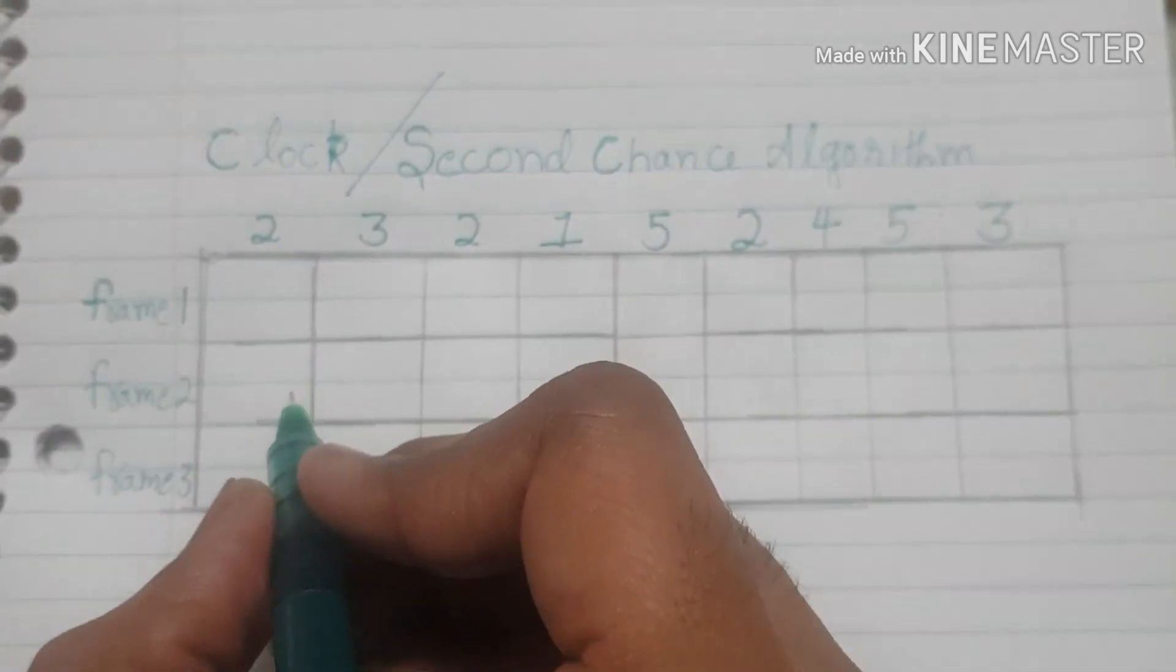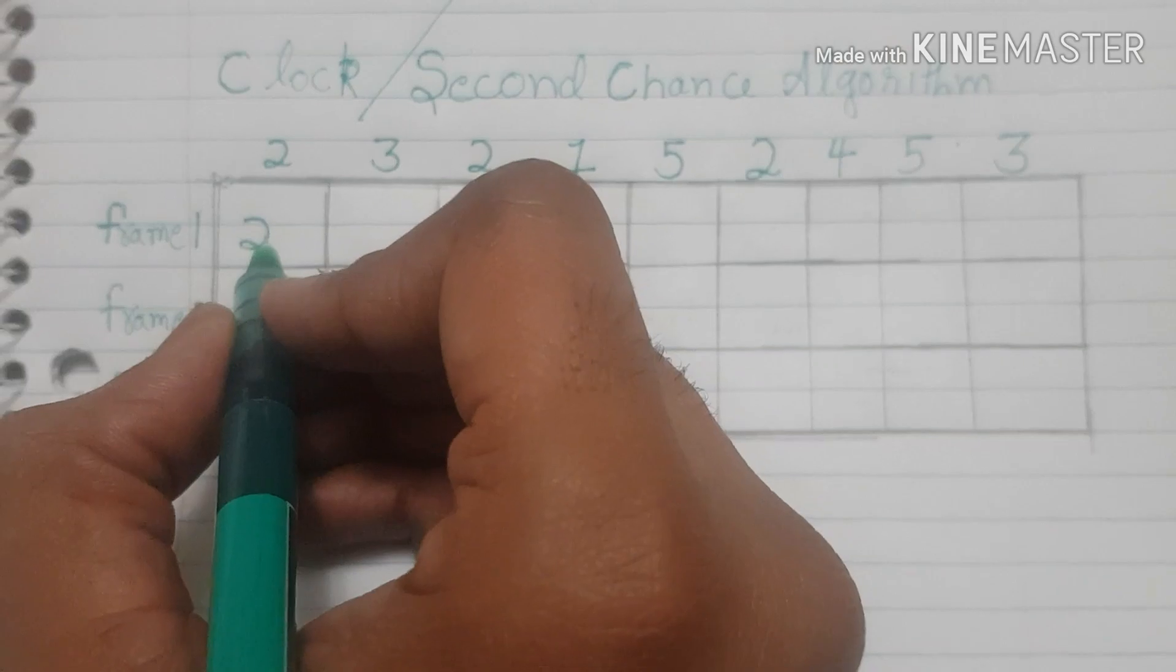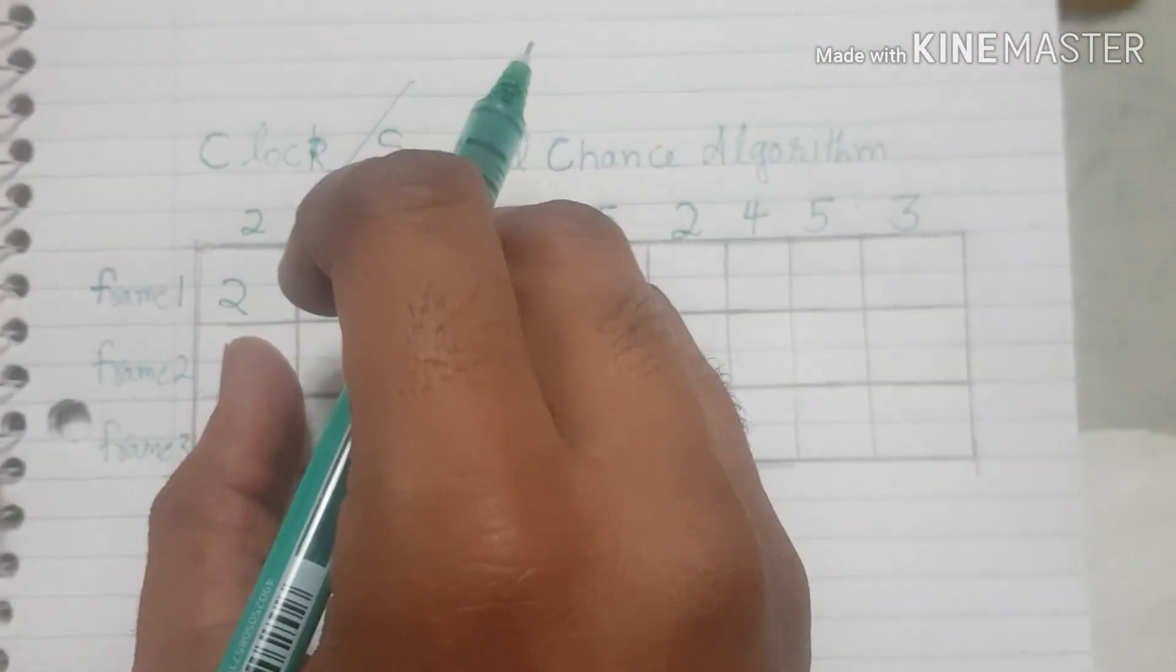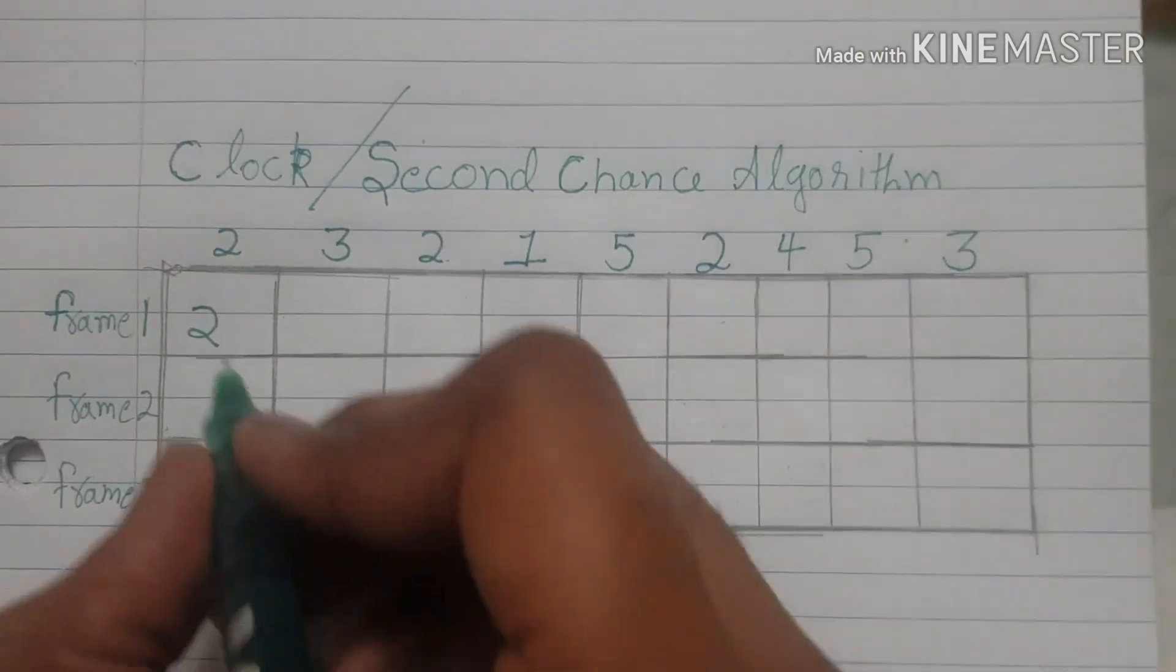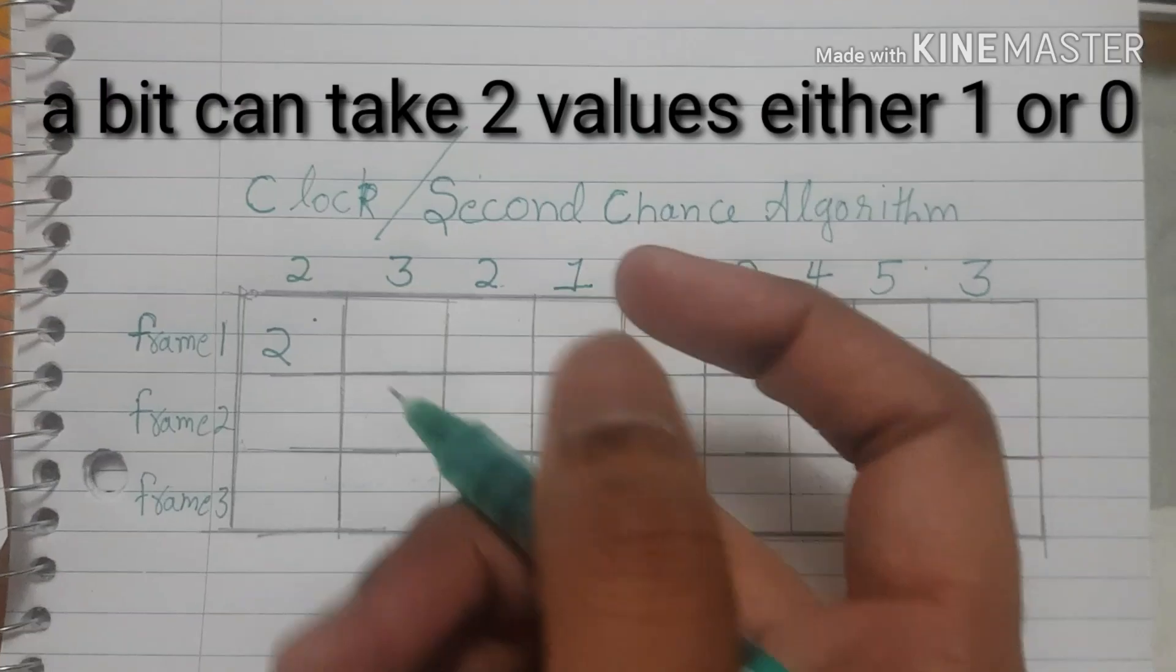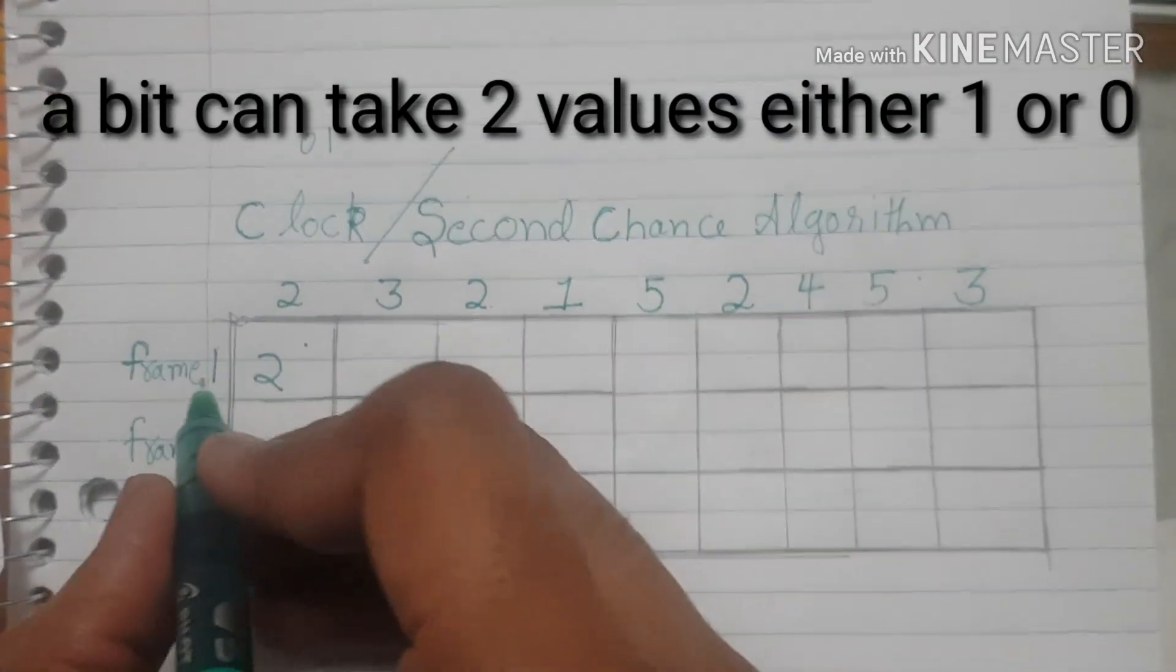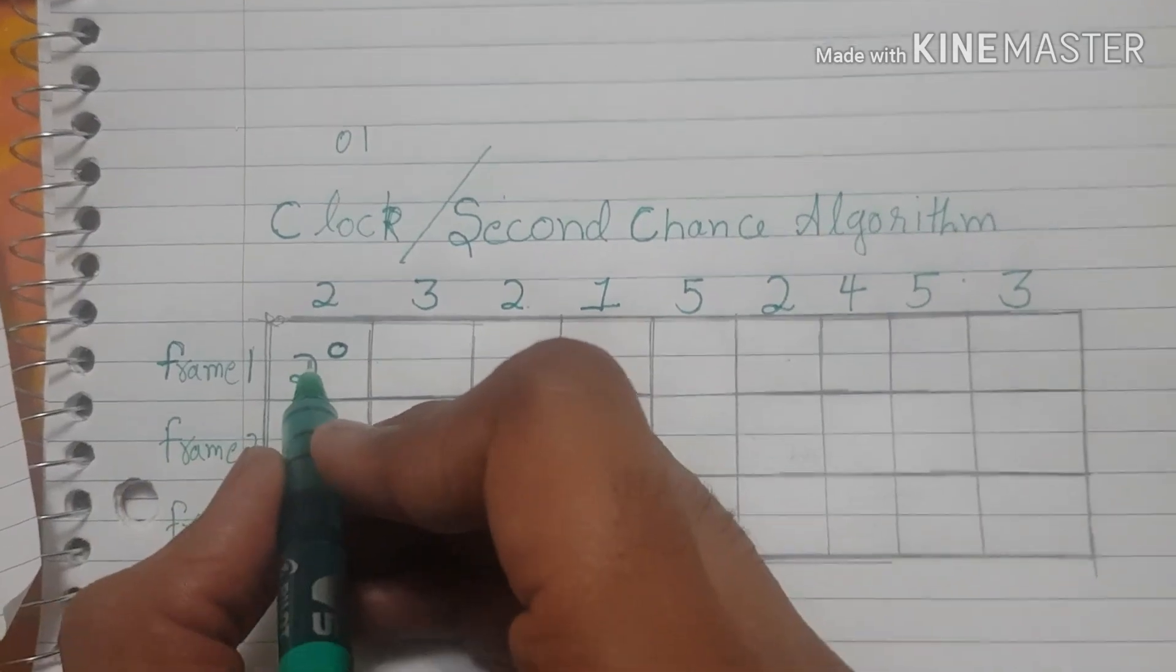Just like first in first out, we will fill in 2 in frame 1. We just brought page 2 to frame 1, but what we do here is we assign a reference bit to every frame. Since a bit can only take two values, either 1 or 0, we assign the value 0 to the reference bit of frame 1.